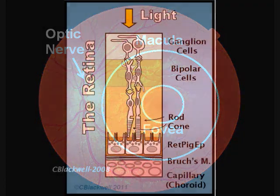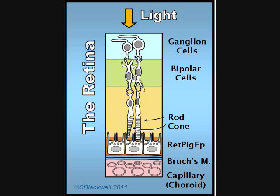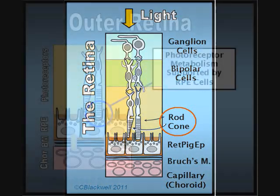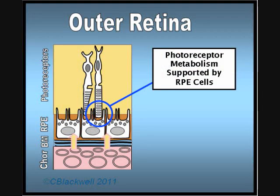If you take a slice through the retina and look at it through a microscope, you would see these layers. It's a little disorienting at first because light comes in from the top and must filter through the top and middle layers to reach the photoreceptors in the bottom layer. The rods and cones are the cells that sense light and generate nerve impulses, which go through several intermediate cells that eventually carry the nerve impulses to the brain. The rods and cones have their ends enveloped by a layer of square-shaped cells called the retinal pigment epithelium, abbreviated RPE.